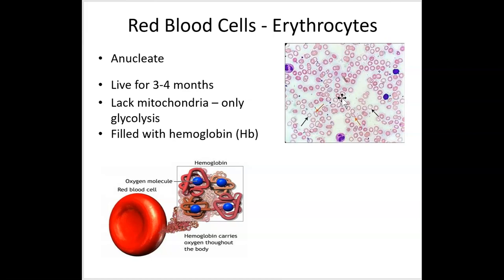Red blood cells are made in red bone marrow — that's the source of all of our red blood cells. They live three to four months, longer in males — closer to 120 days — and about 90 days in females. Part of that's due to testosterone. They're basically just a little sack of hemoglobin, and you'll see that this hemoglobin has a red pigment called heme.